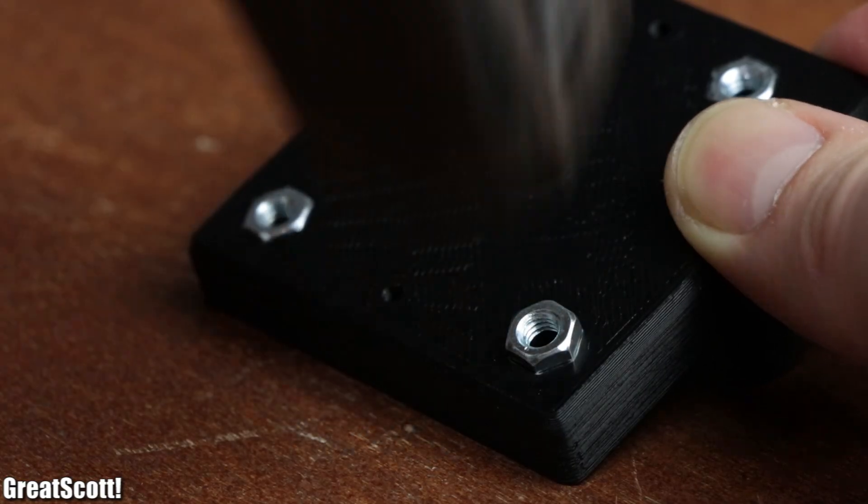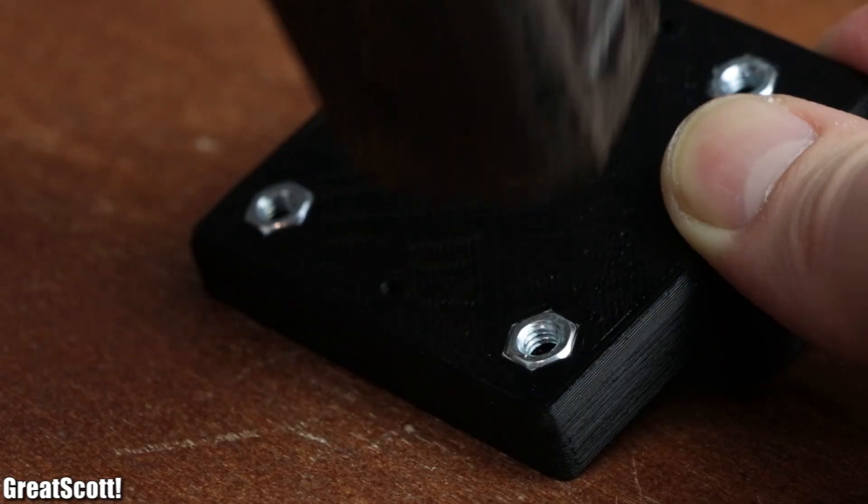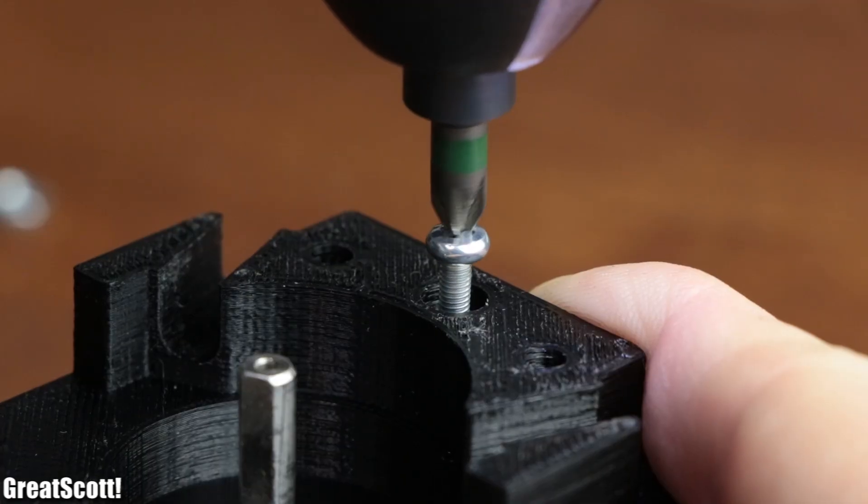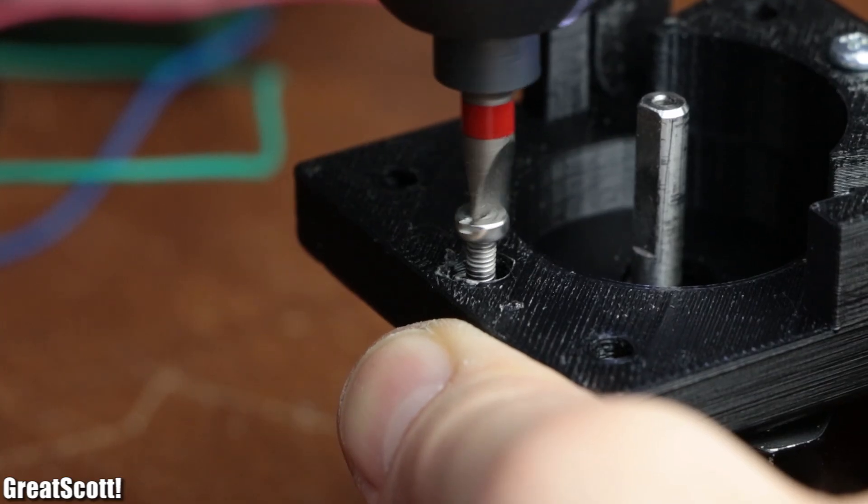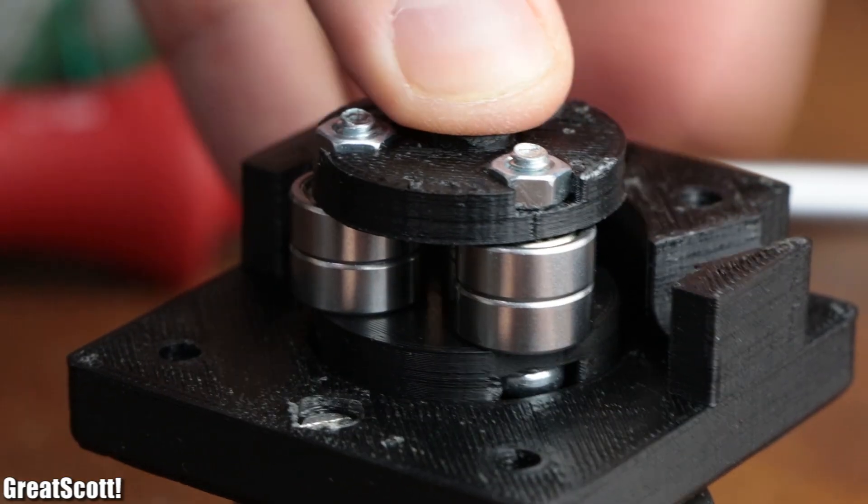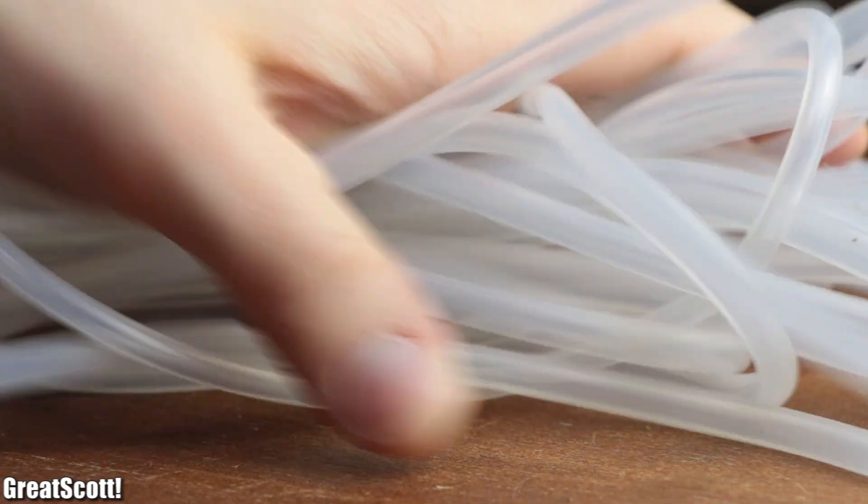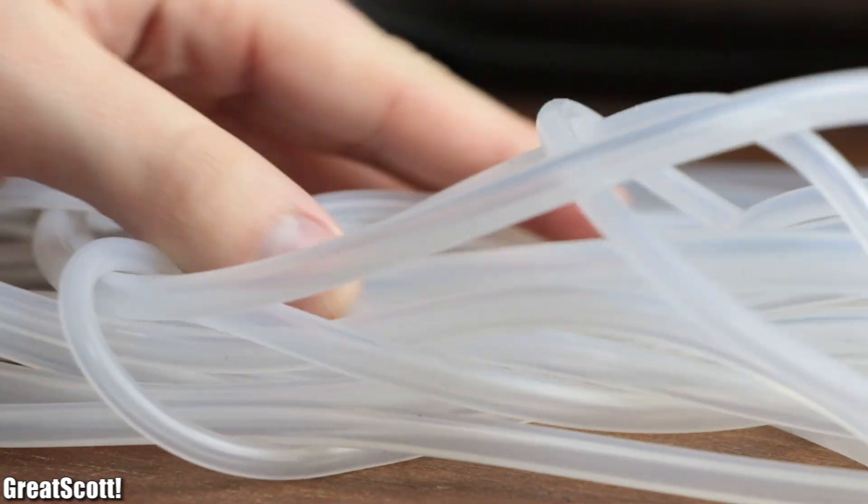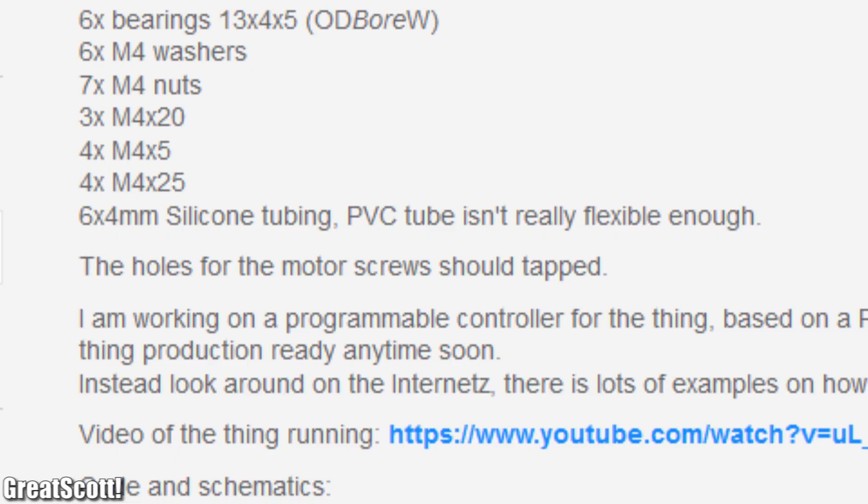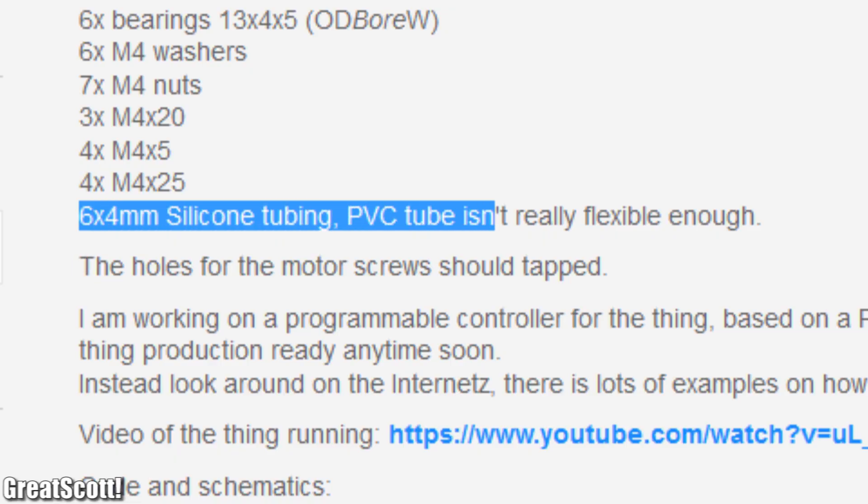Next I added four M4 nuts to the bottom side of the enclosure, secured the stepper motor to it with two M3 bolts, and slid the rotor onto the motor shaft.